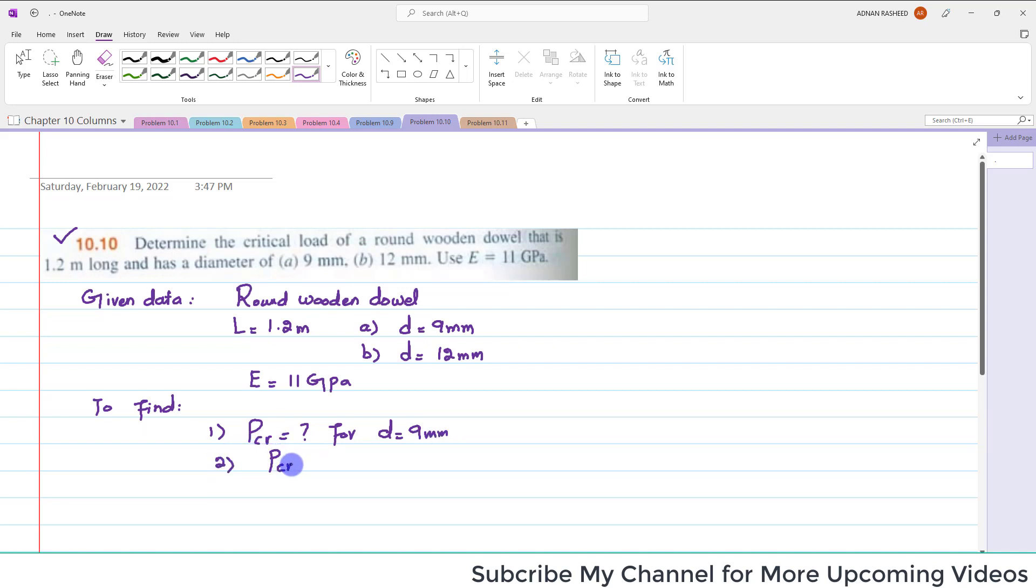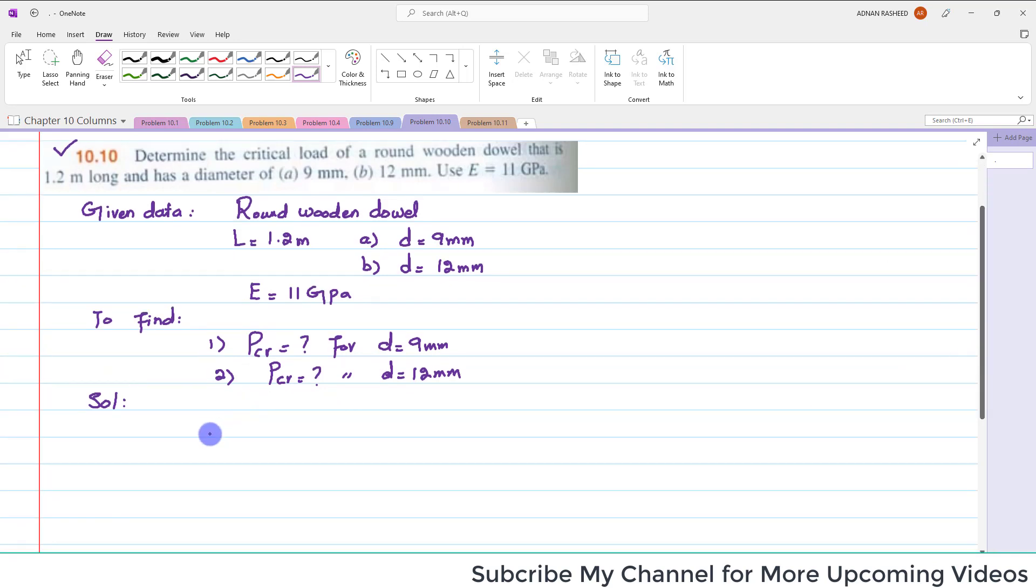We have to find critical loading for d equals 9 mm, and in the second part we have to find again the critical loading for d equals 12 mm. So let's start its solution. As we know that P critical is equal to pi squared E I divided by L squared.